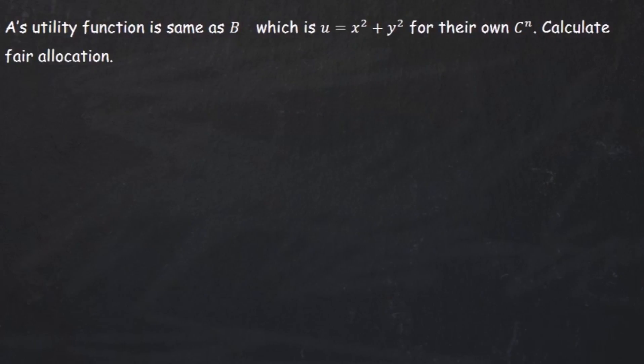The first numerical that we do is a simple one. We are given that A's and B's utility function are the same, which is x squared plus y squared. We are supposed to find out the points of fair allocation. So for A, it's uA equals xA squared plus yA squared and similarly for B. For the sake of ease, let's assume a square box.